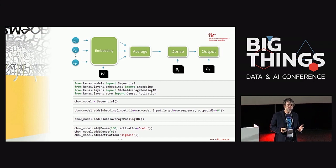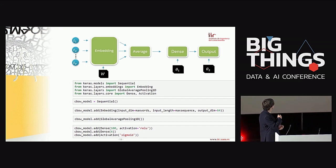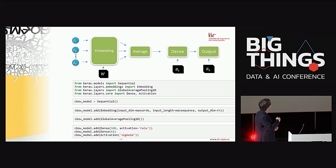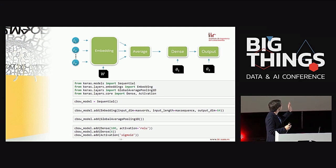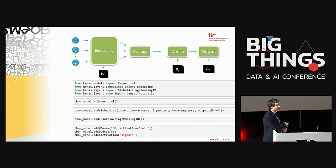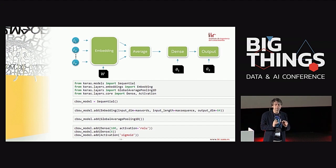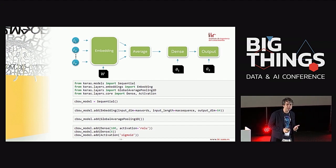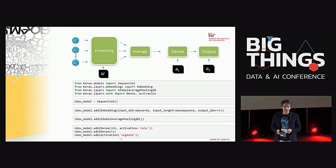This is easy to implement in Keras: initialize a Sequential model, add an Embedding layer, then a global average pooling layer, then a dense and output layer. It's almost a one-to-one mapping between the architecture and the code. We train this model, test it on the test data — and it doesn't work.